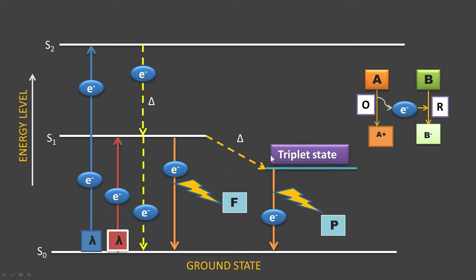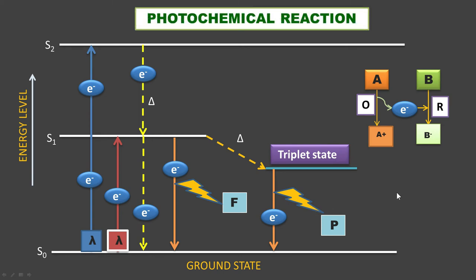the triplet state gives electrons to other molecules. Then the reaction takes place—a chemical reaction powered by light, which is known as a photochemical reaction. This term is very important, please remember that.